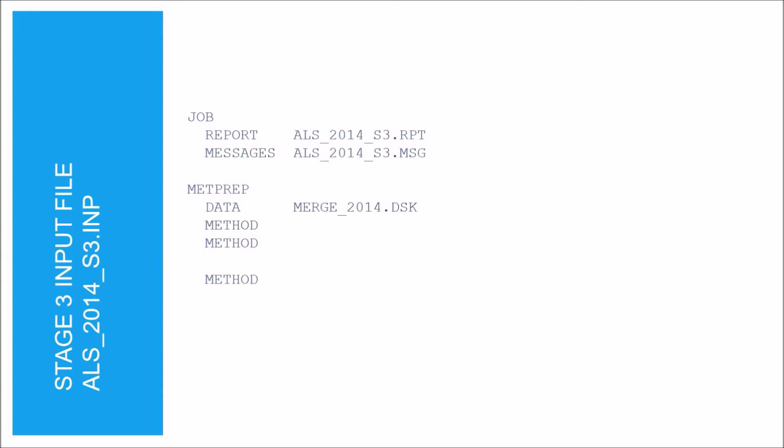The method keyword is used to specify the processing options, and they do not need to be grouped together. We listed three common processing options here. The first option is REF LEVEL followed by SUB and WS — when specified, AirMet uses the standard hourly wind speed and wind direction in the event the one-minute data is missing for that hour. The next option specifies to randomize the wind direction, which is needed because the wind direction in the standard hourly data file is rounded to the nearest 10 degrees; this option is not applicable to the ASOS one-minute data. The next option is the upper air selection option followed by the sunrise option, which specifies that the upper air sounding closest to sunrise will be used to calculate the boundary layer parameters.